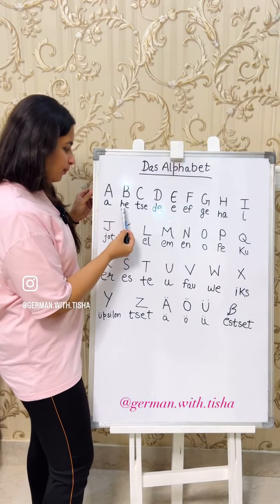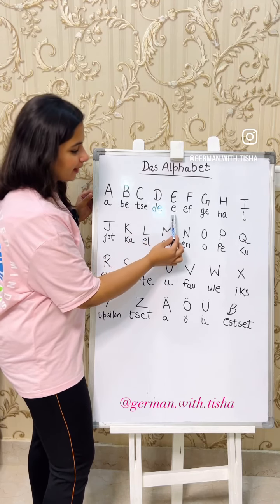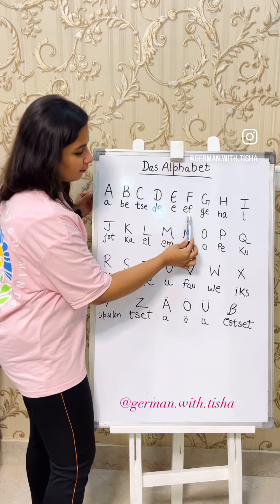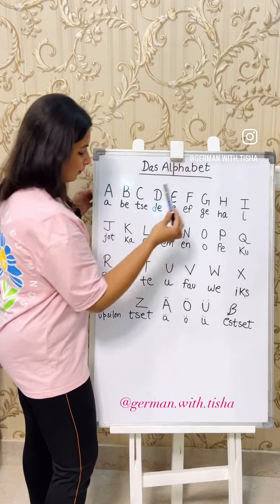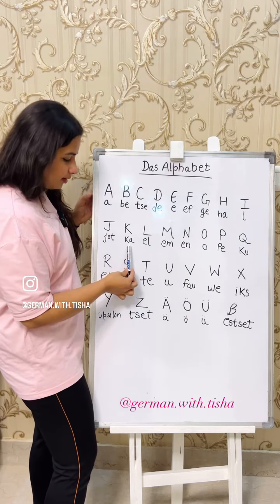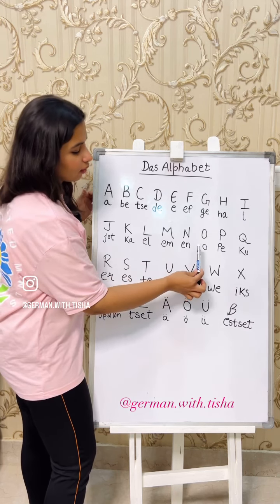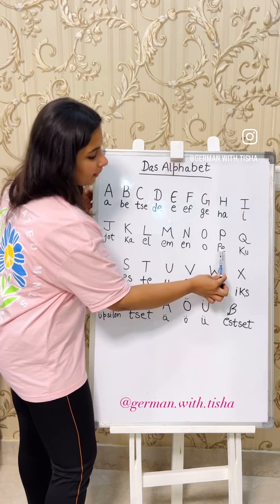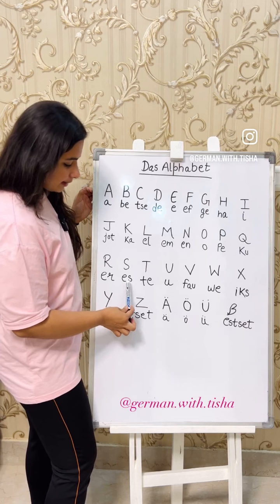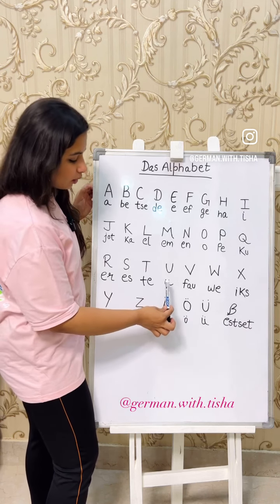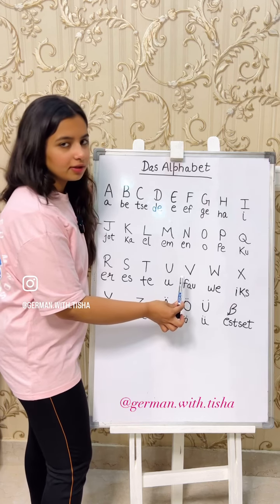A, B, C, D, E, F, G, H, I, J, K, L, M, N, O, P, Q, R, S, T, U, V. V is pronounced as F in German.